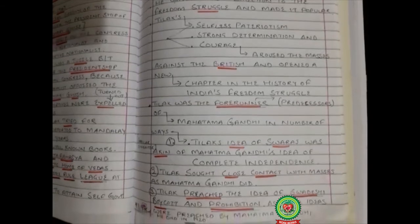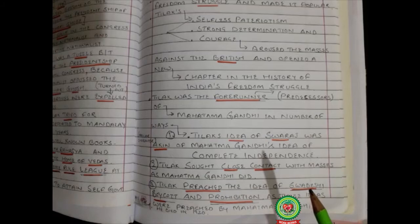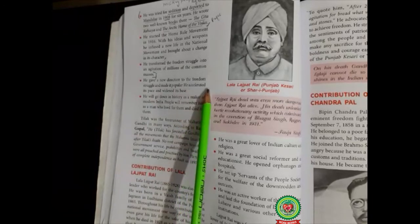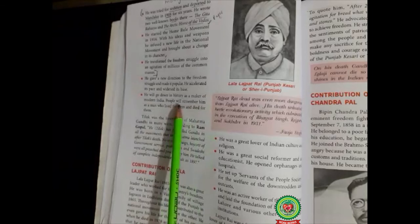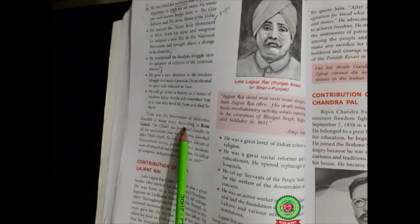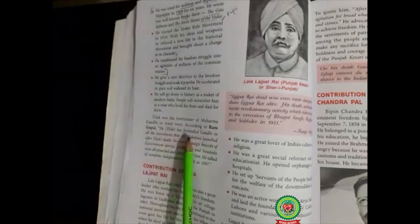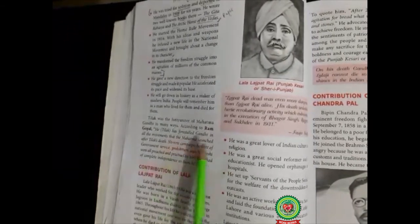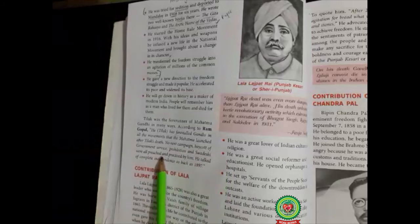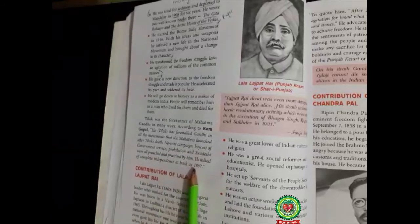Bal Gangadhar Tilak died in 1920. He gave a new direction to the freedom struggle and made it popular. He accelerated its pace and widened its base. He will go down in history as a maker of modern India. According to Ram Gopal, Tilak was forerunner of Gandhi in all the movements Gandhi led after Tilak's death — no rent campaign, boycott of government services, prohibition, and swadeshi were all praised and practised by Tilak. He talked of complete independence as far back as 1897.